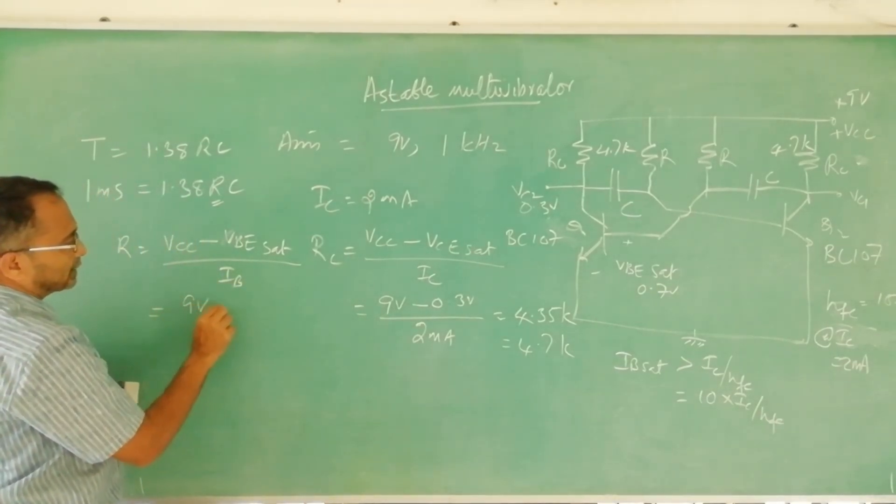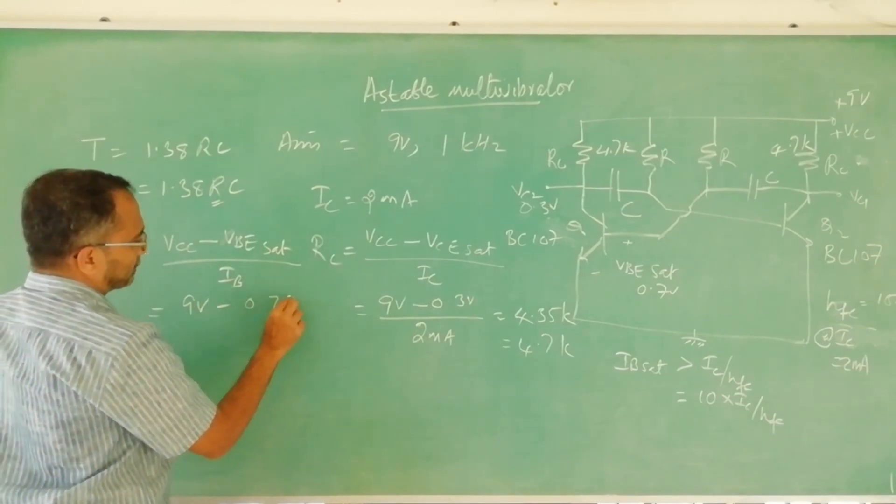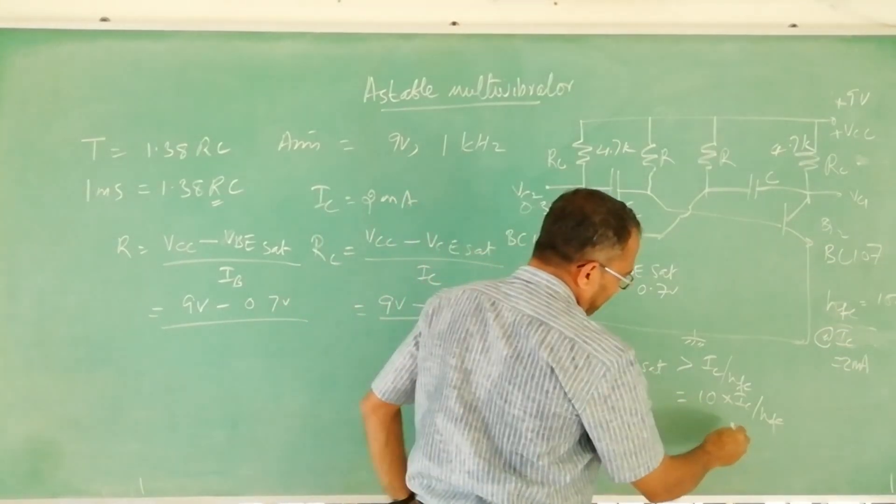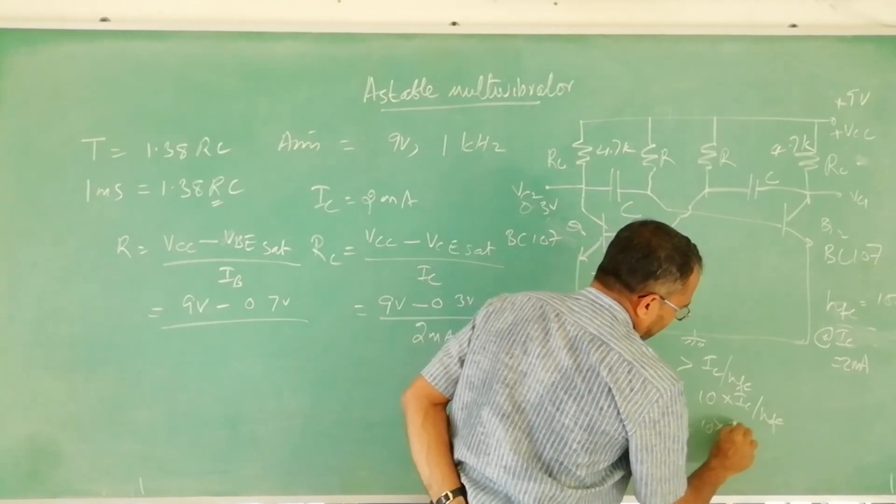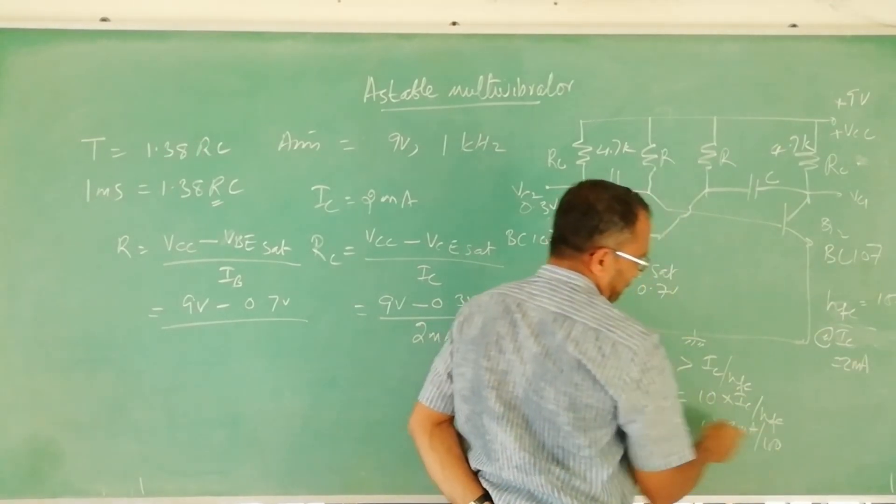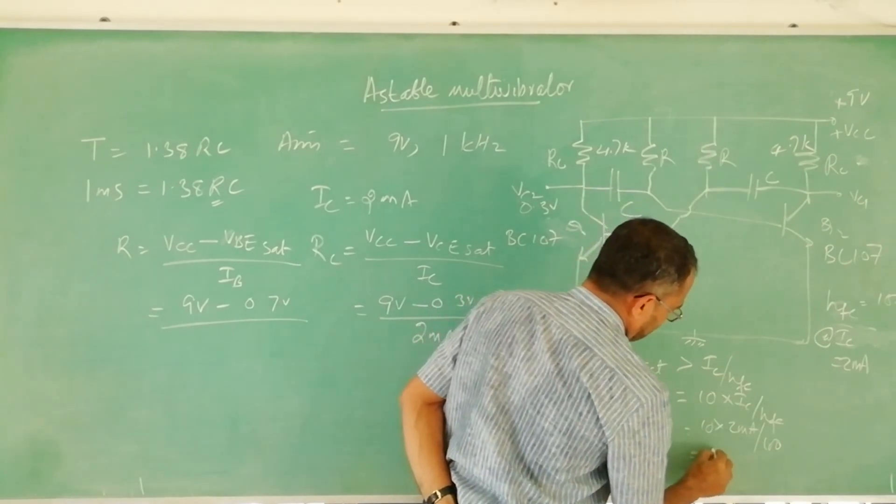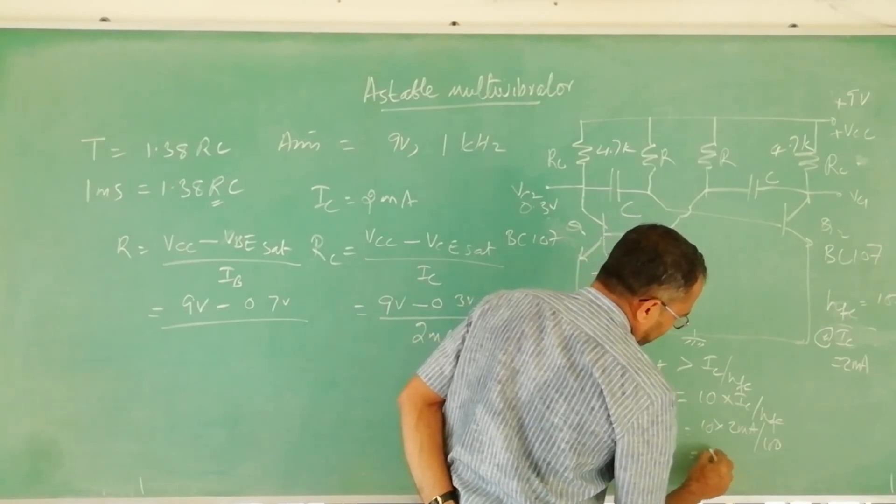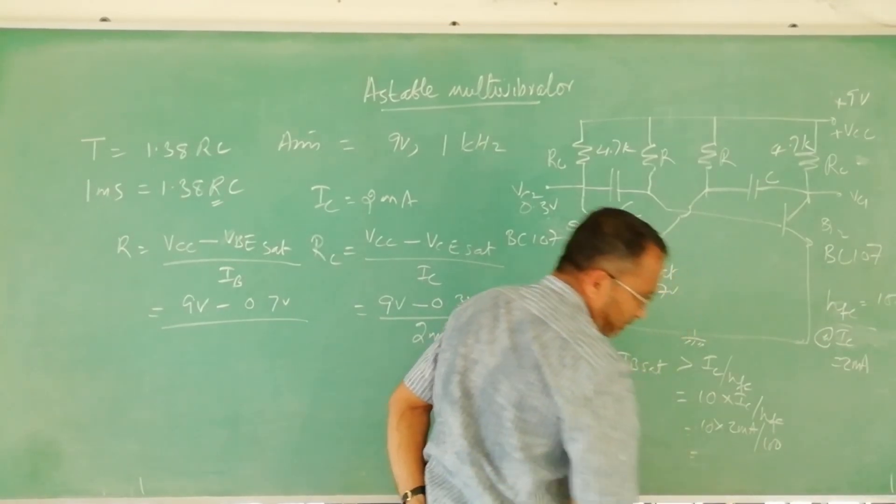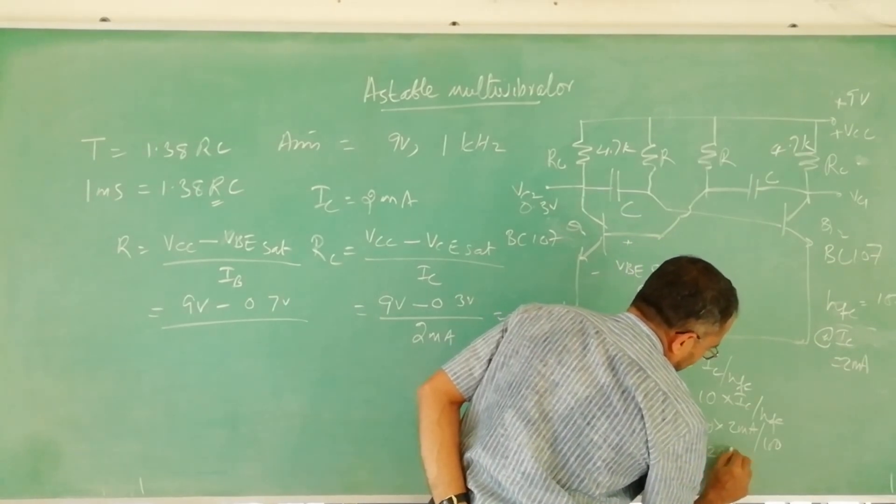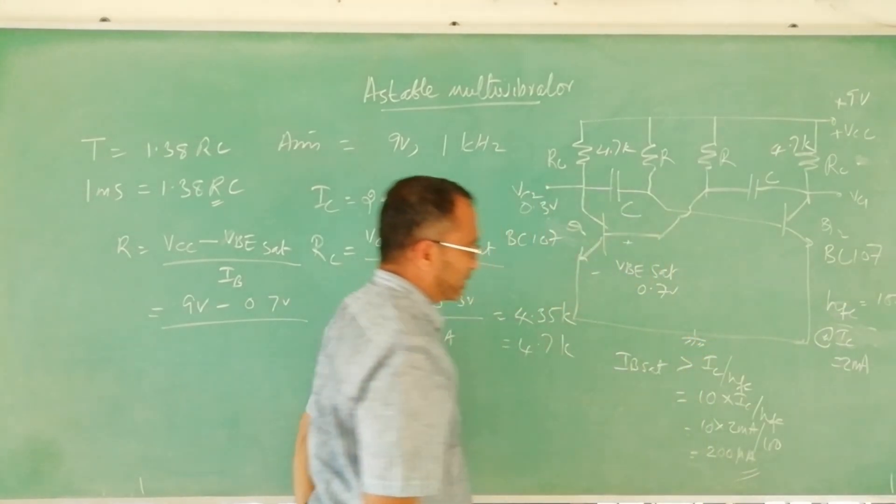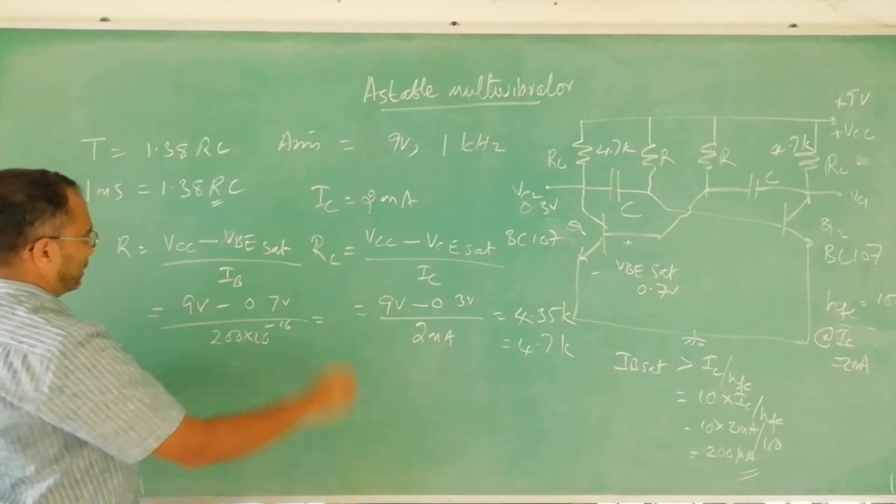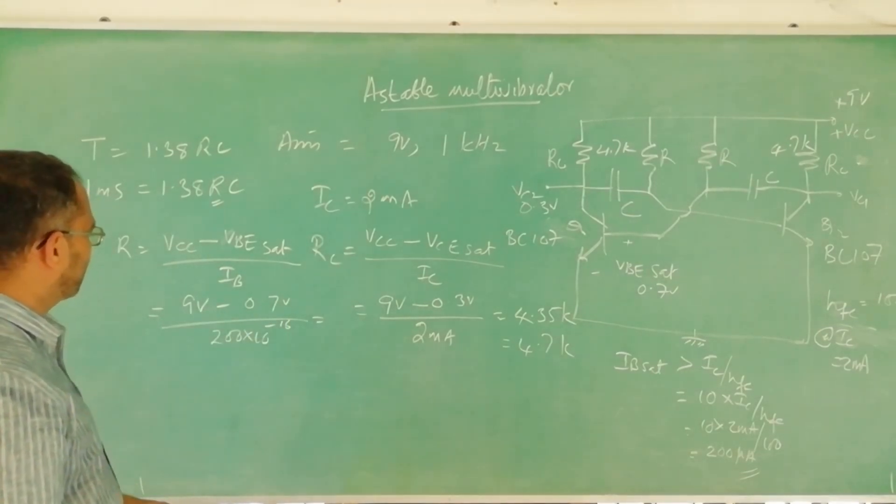VCC we know, 9 volt. VBE sat is about 0.7 volt and IB is IC by hFE, 10 into IC by hFE. IC is 2 milliampere so 10 into 2 milliampere by 100, that will be about 200 microampere. So that you have to put it here. You will get a value.